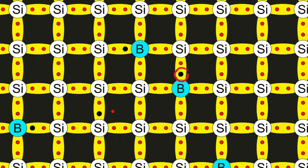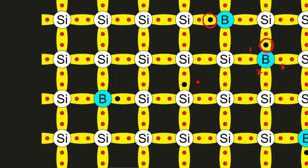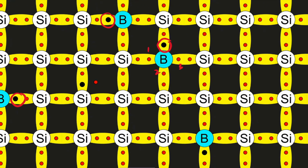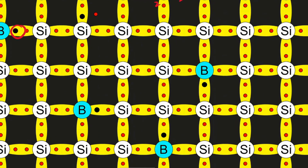Because boron only has three valence electrons, when we add many boron atoms, wherever the boron atom bonds with silicon atoms, there will be holes. By adding boron into the structure of the pure silicon, we have managed to create a lot more holes than a pure silicon semiconductor would have. This is known as the P-type semiconductor.